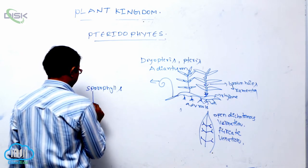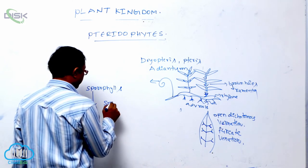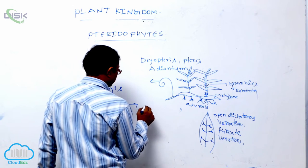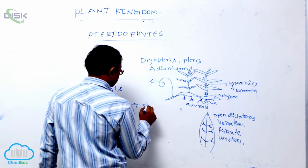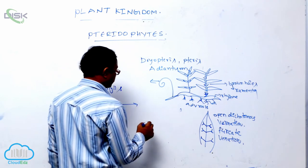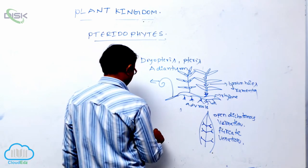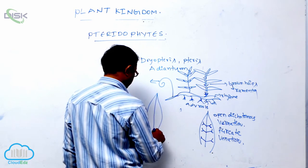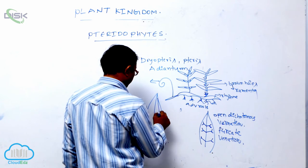Sporophylls are arranged in groups known as sori. These sori can form strobili and are present at the ventral side of the leaflet.